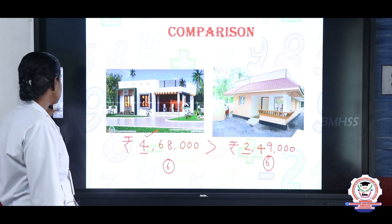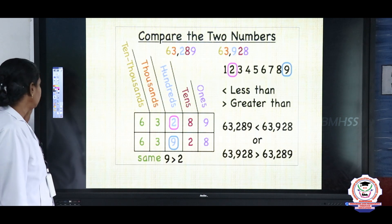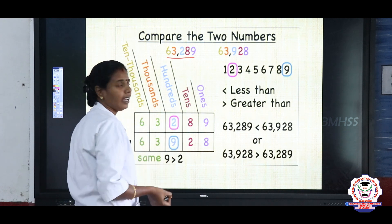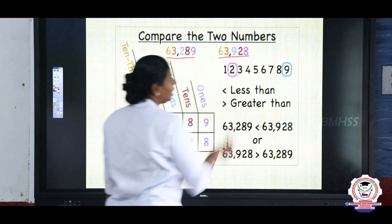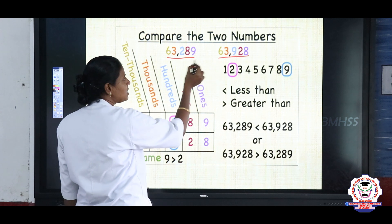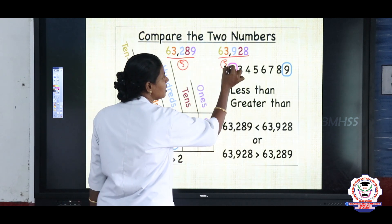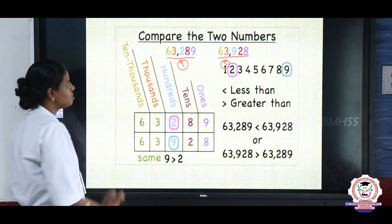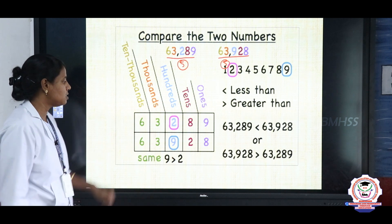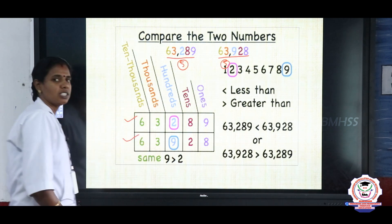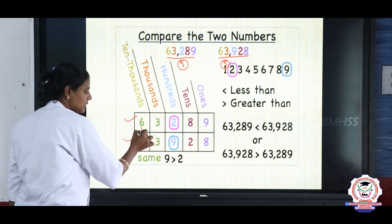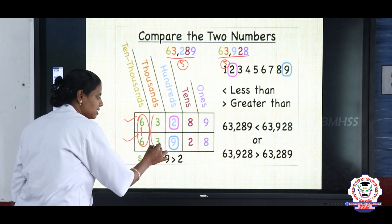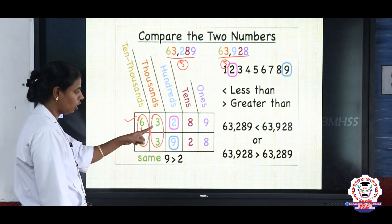Let's look at an example question. The numbers given are 63,289 and 63,928. Both numbers have 5 digits. We place them in the place value chart — ones, hundreds, thousands, ten-thousands. Since both are 5-digit numbers, we compare the first digit: both have 6 in the ten-thousands place. Then we check the next digit — both have 3 in the thousands place. Both are the same.